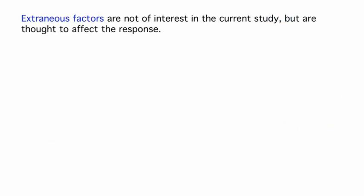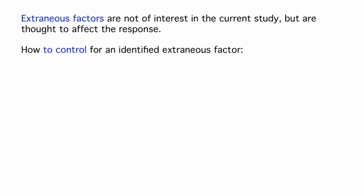Extraneous factors are factors that are not of interest in the current study, but are thought that they might affect the response. They need to be controlled to rule out the possibility that the extraneous factor is causing any observed differences in the response. The first option is to hold it constant. Say we think the HPV vaccine might work differently on males and females — we can make the decision to study only females. If we think it might work differently in different age groups, we could choose to study only one particular age group. This limits generalizability, but eliminates the potential of having the extraneous variable confound the results.